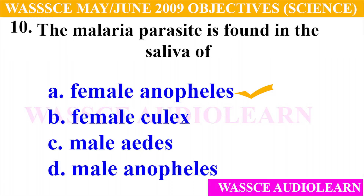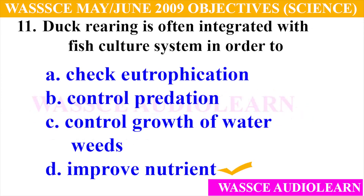Question 10: The malaria parasite is found in the saliva of — A. Female Anopheles, B. Female Culex, C. Male Aedes, D. Male Anopheles. And the answer is A, female Anopheles.